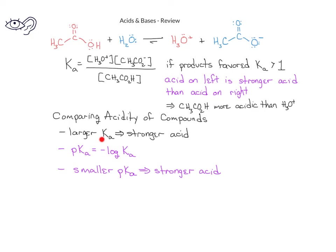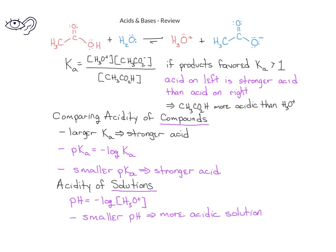While the Ka or pKa can be used to compare the acidity of compounds, when we have a solution, we use a different measure for the acidity of the solution. The pH of a solution is the negative log of the hydronium ion concentration in that solution. Furthermore, as the pH of the solution decreases, the solution is more acidic.